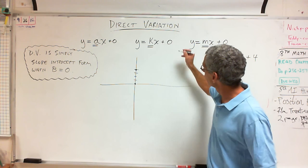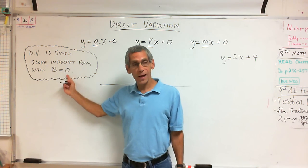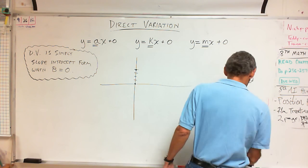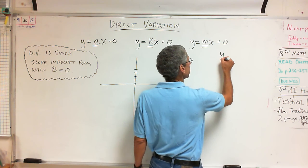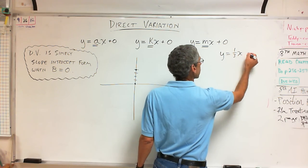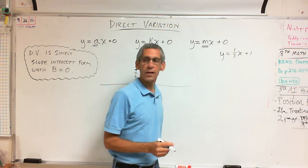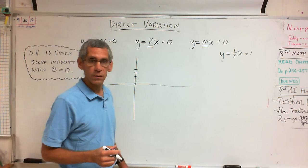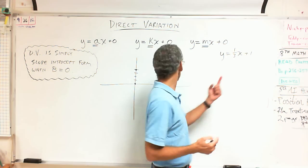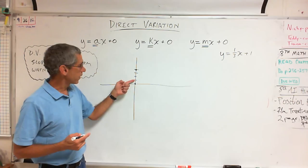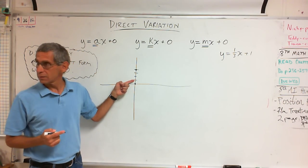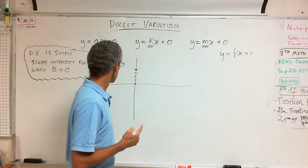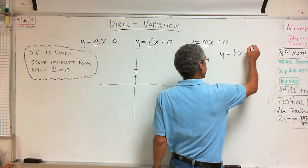The B has to be zero. So if I give you y equals one-third x plus 1, is that an example of direct variation? No. Why? Because the B is not zero. I wouldn't go through zero, zero. I would have to put my Y-intercept at 1. That is not direct variation.